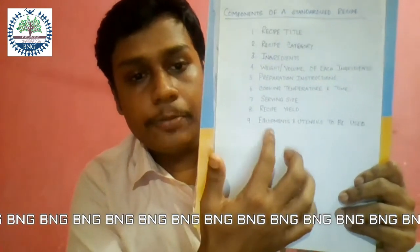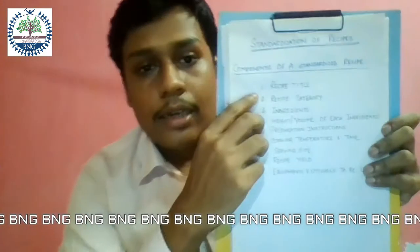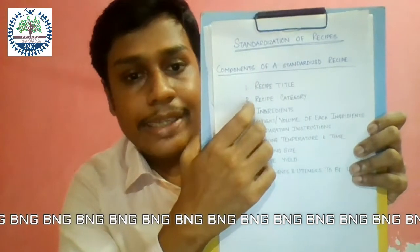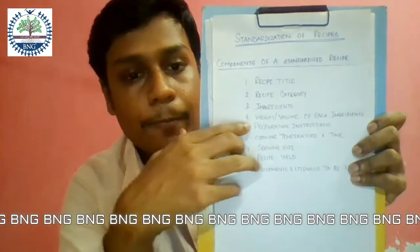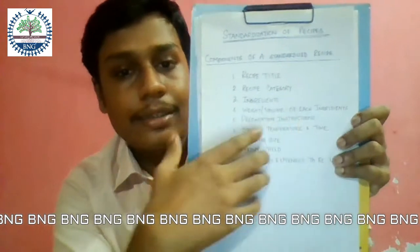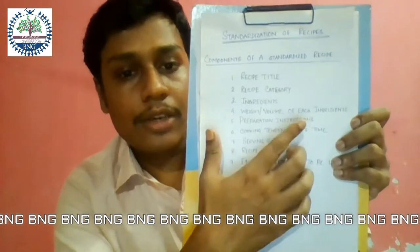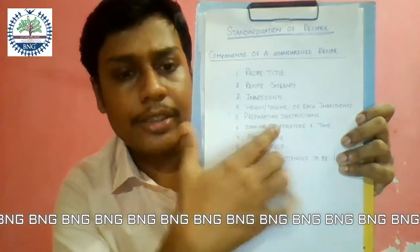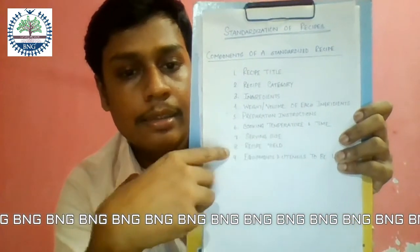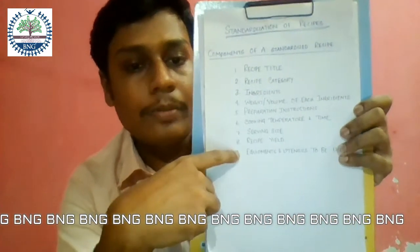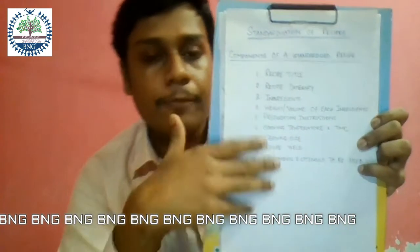The last component is the instruments and utensils to be used — what utensils you need to make the dish. So in summary, when standardizing a recipe you must mention: recipe title, recipe category, ingredients with weight and volume, preparation instructions, cooking temperature and time, serving size, recipe yield, and equipment and utensils to be used.